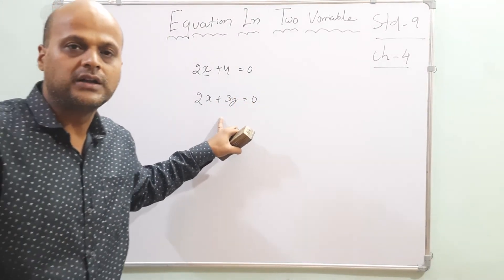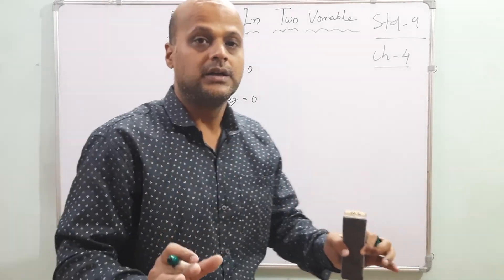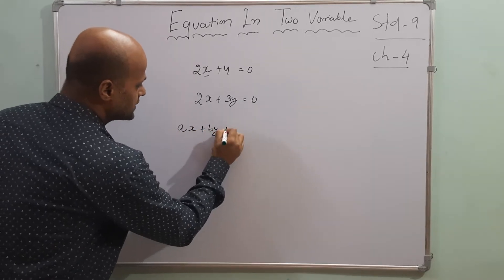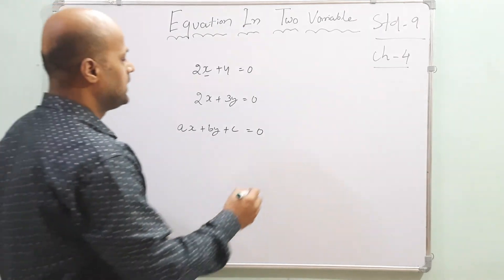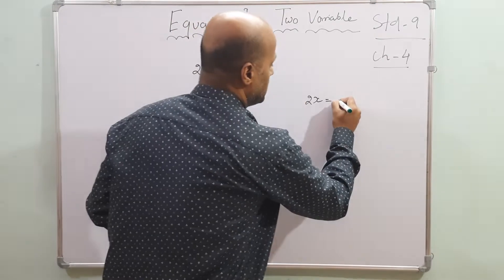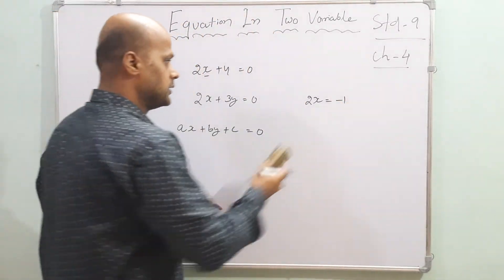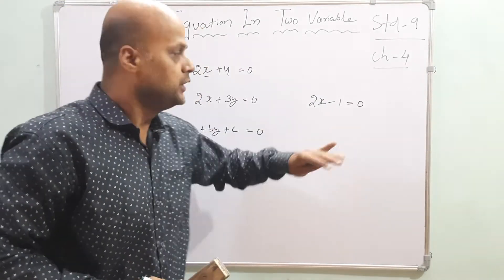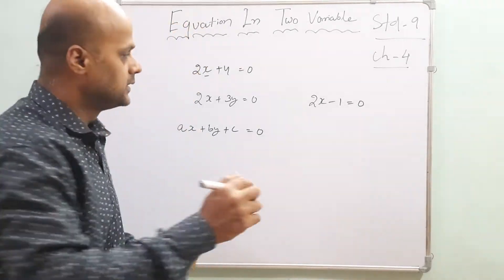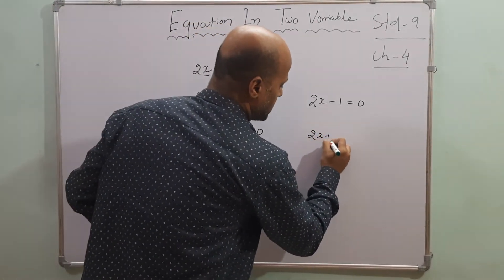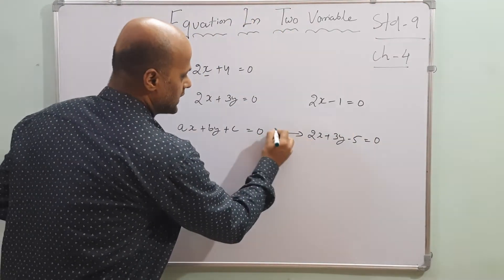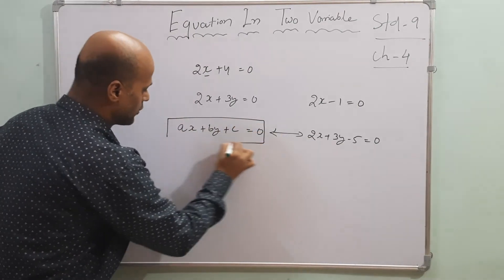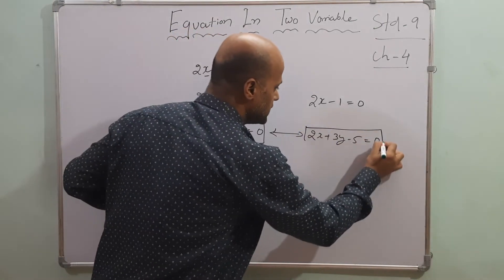An equation in two variables is specified in the standard form: ax plus by plus c is equal to 0. For example, 2x minus 1 is equal to 0, or more clearly, 2x plus 3y minus 5 is equal to 0. Any equation written in this format is called an equation in two variables.